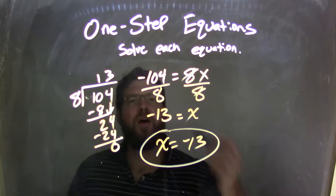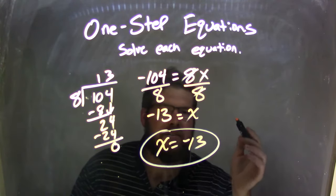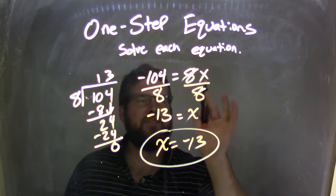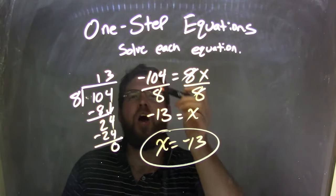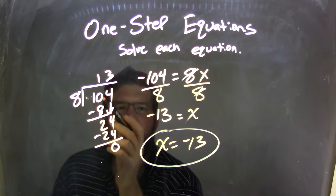So, let's recap. We start with negative 104 equals 8x. It was 8 times x. Opposite of multiplication is division. So I divided 8 on both sides. 8 is canceled, so we're done. So we just have the x here. But 104 divided by 8, I did use long division.